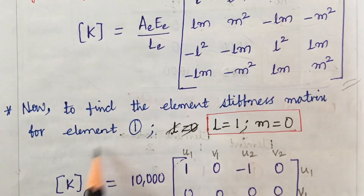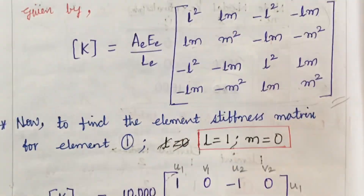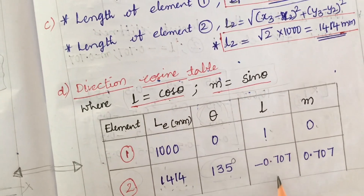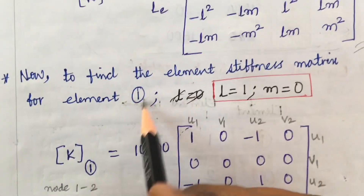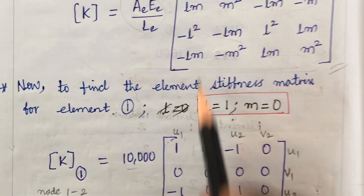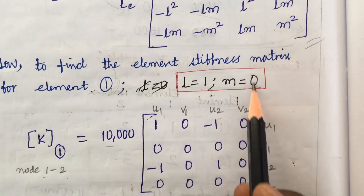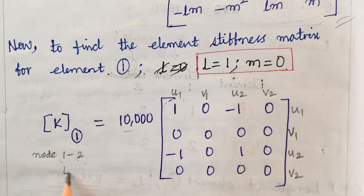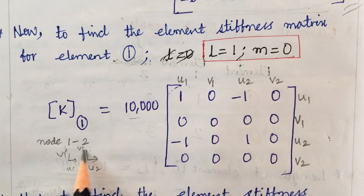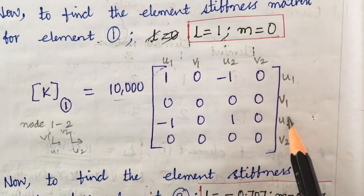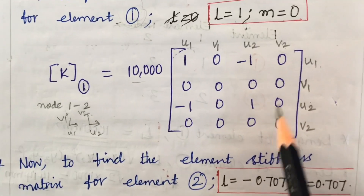Now, to find the elemental stiffness matrix for element 1: the values required are l and m. For element 1, l equals 1 and m equals 0. Substituting these into the formula, with the coefficient 10,000, and writing the displacement degrees of freedom as u1, v1, u2, v2 along the rows and columns, we get the elemental stiffness matrix for element 1.